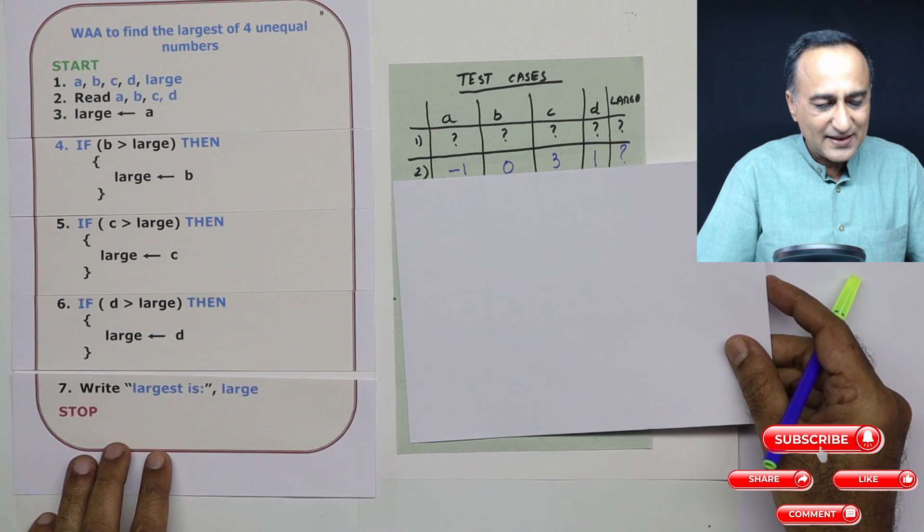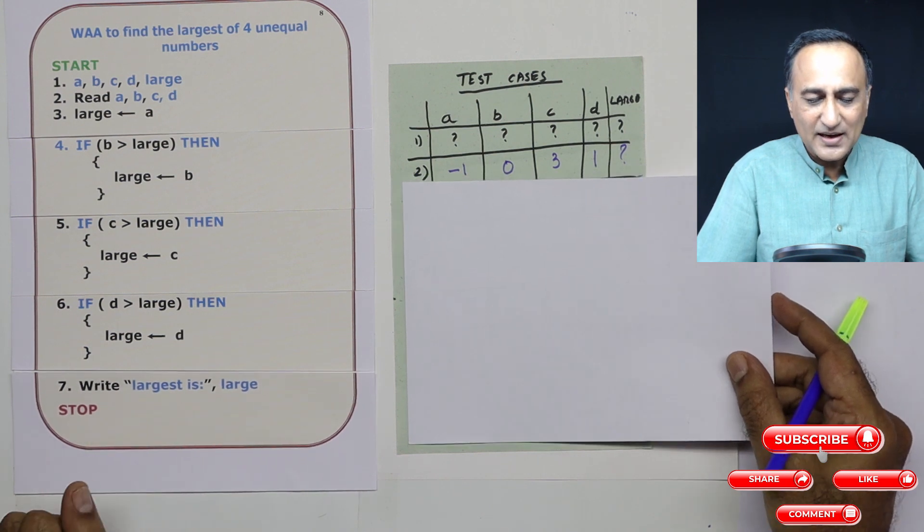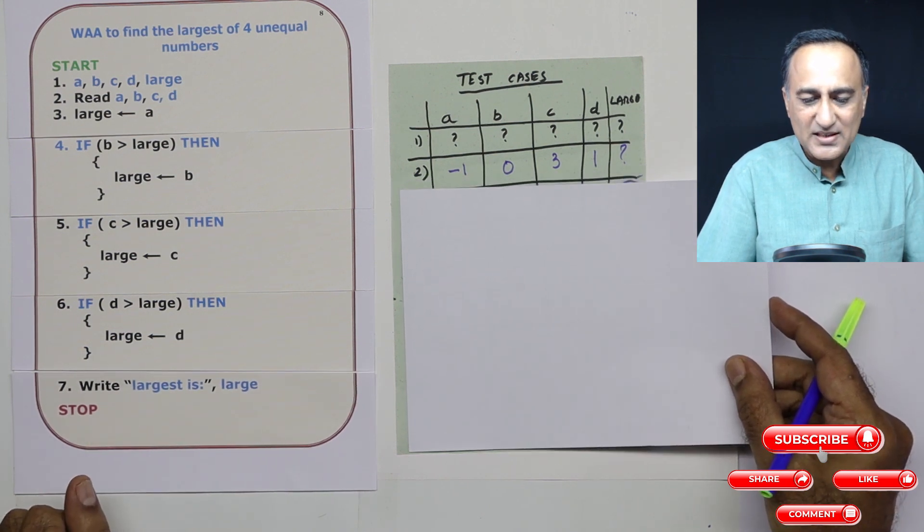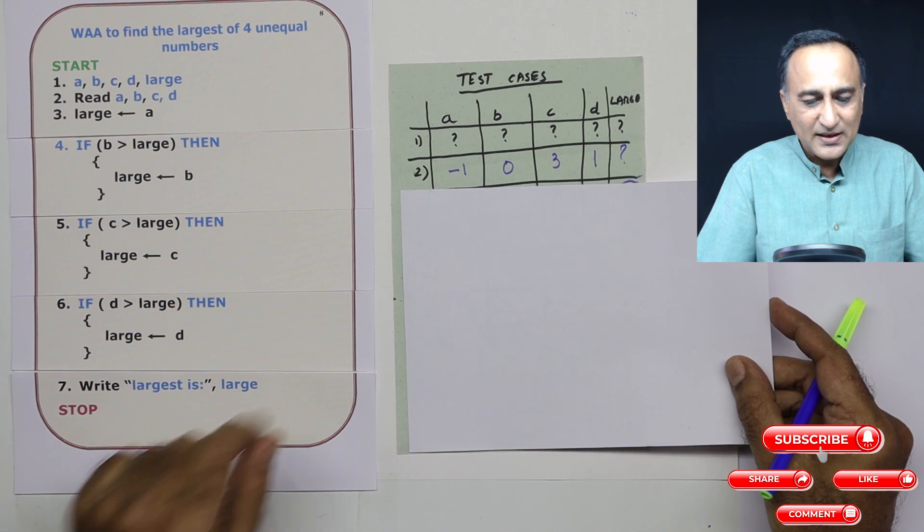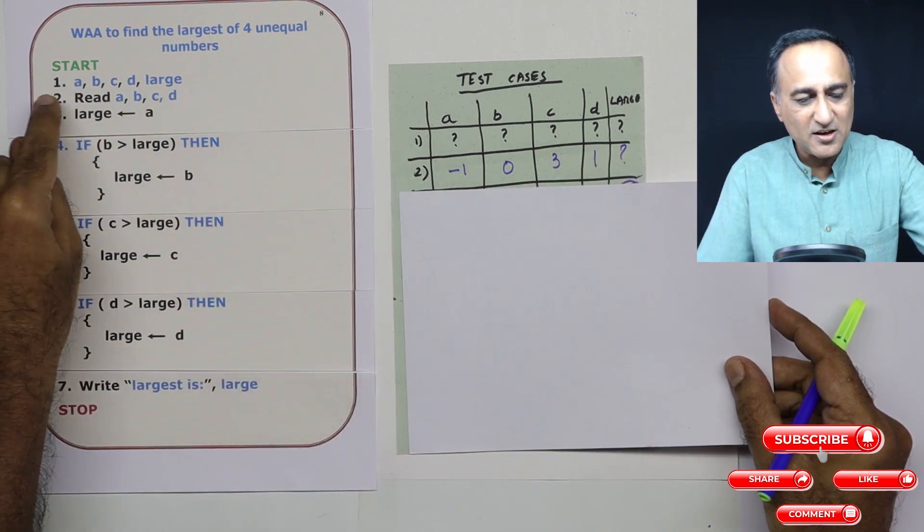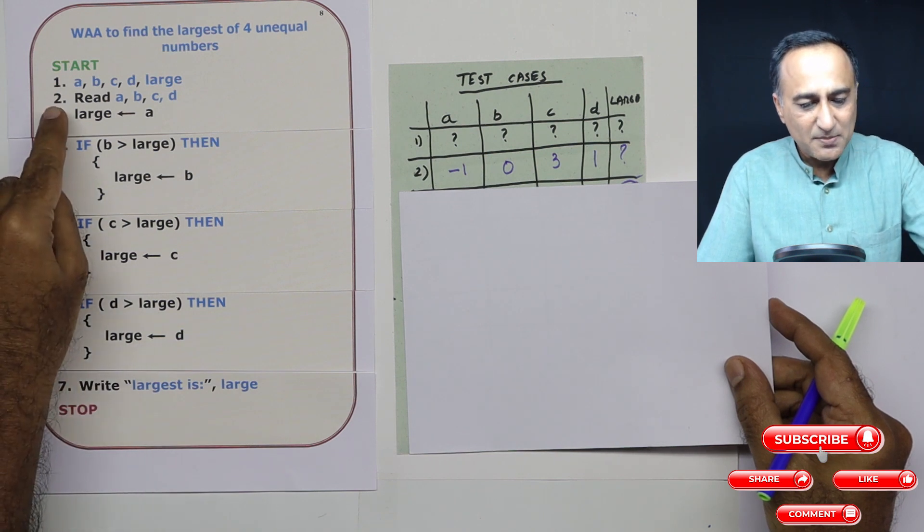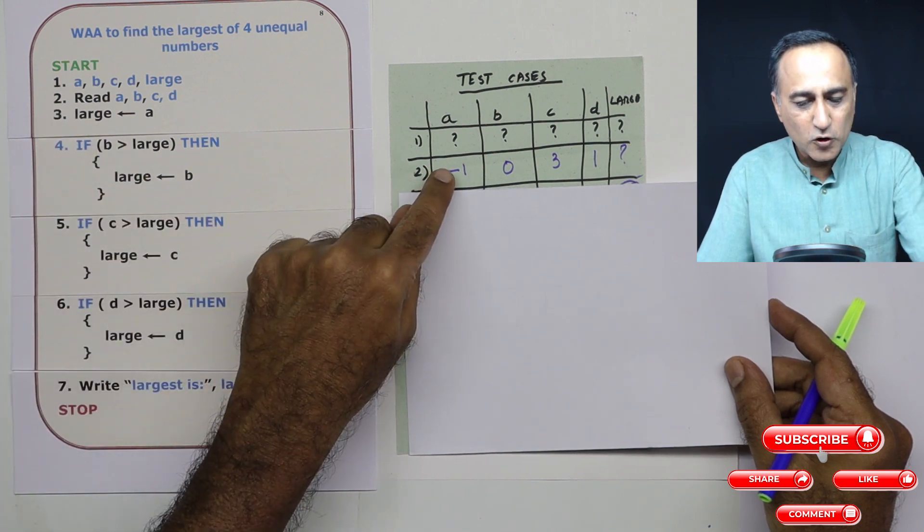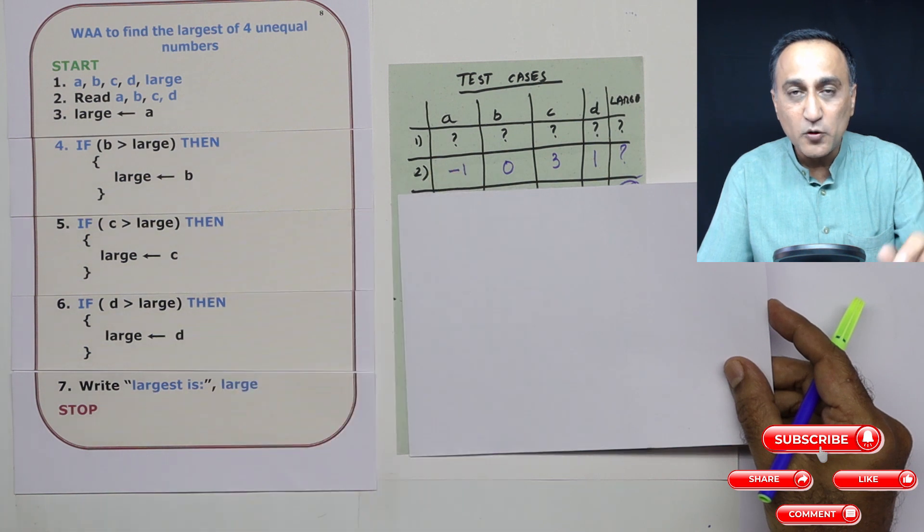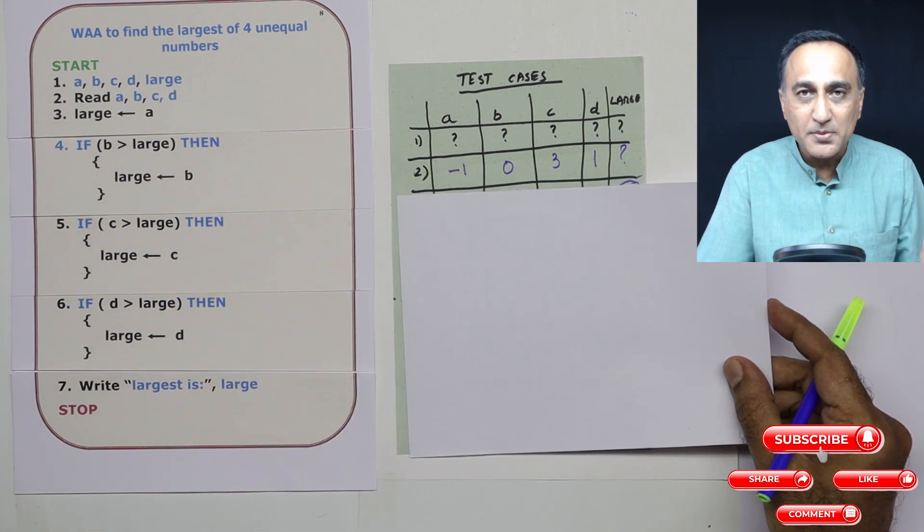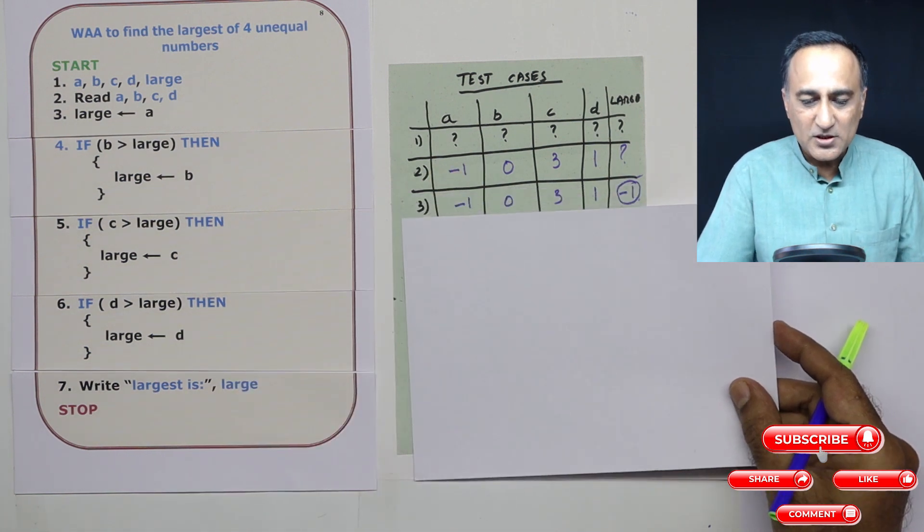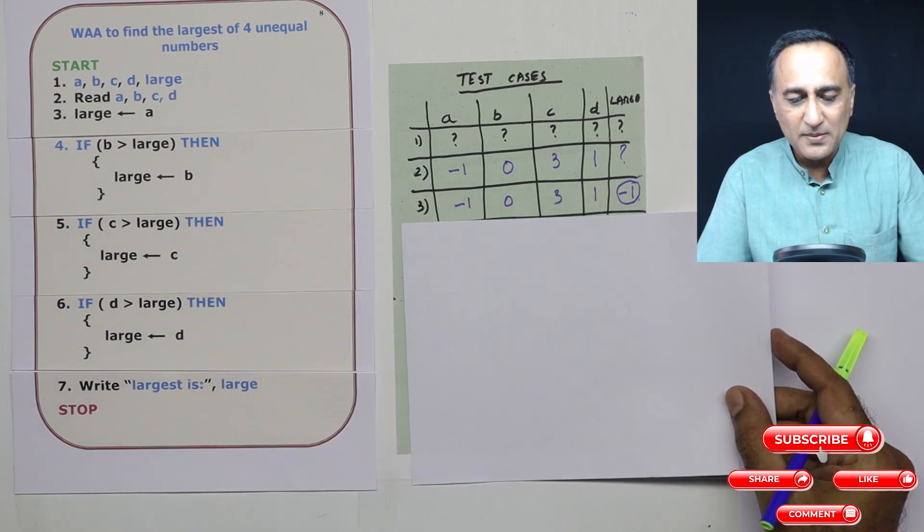Step number two, let us say I give A as minus one, B as zero, C as three, and D as one. Large has not changed because nothing of large is touched in step number two. In step number three, large should automatically be minus one because I am going to deal with one number at a time. So you will see large has become minus one.